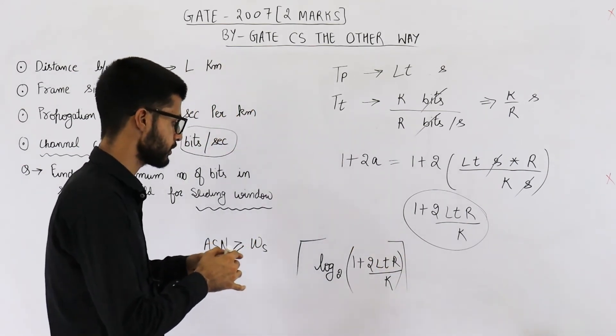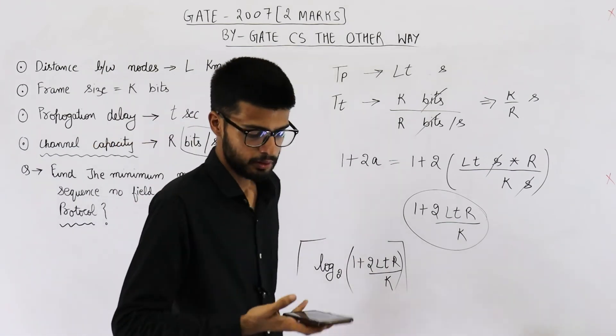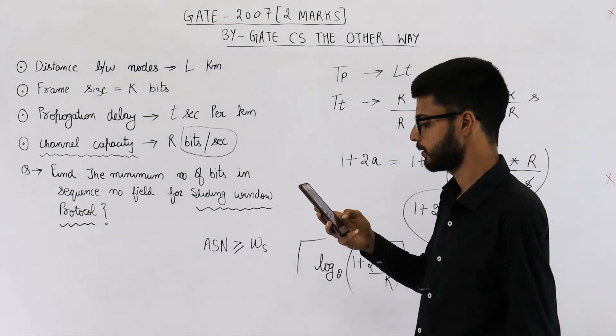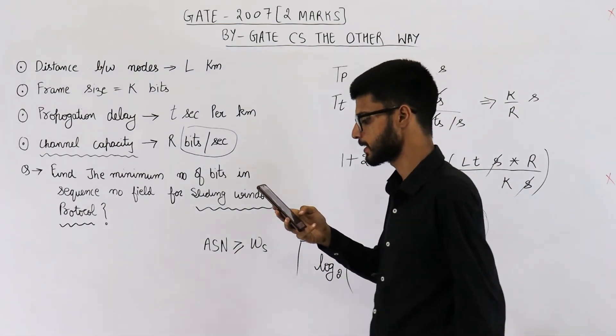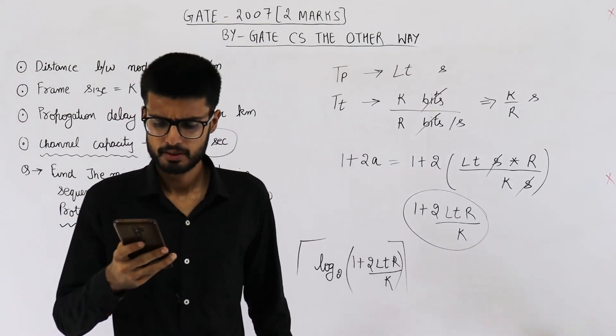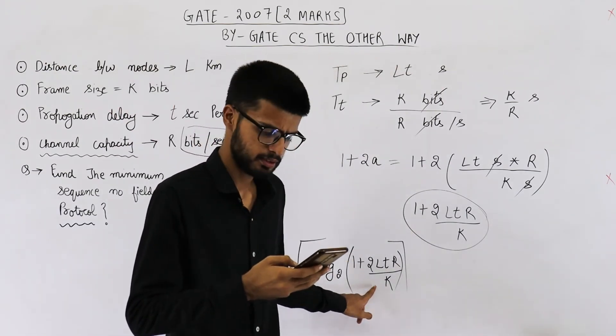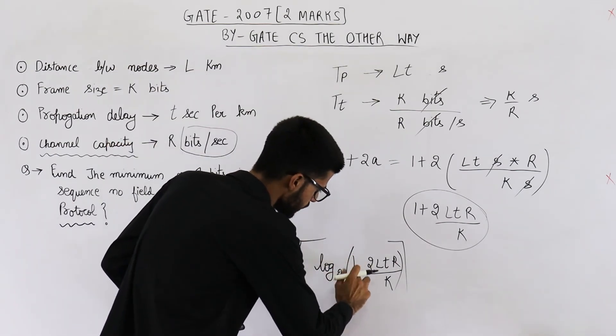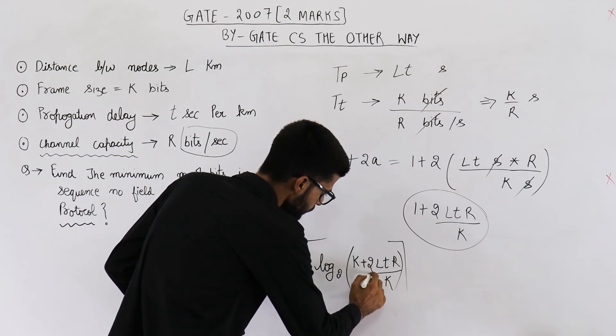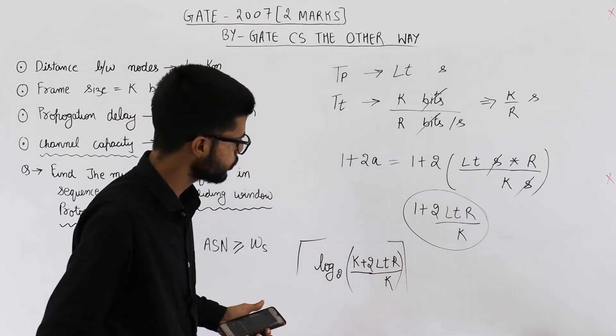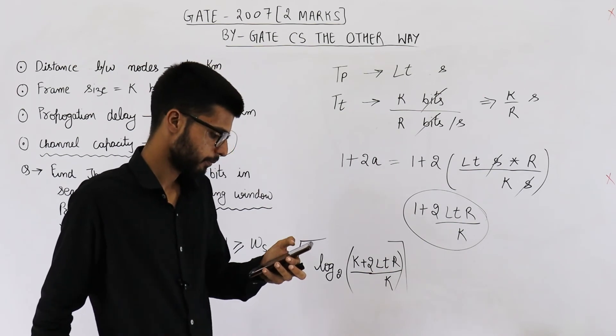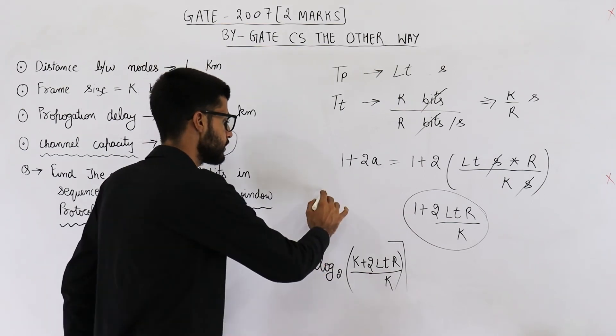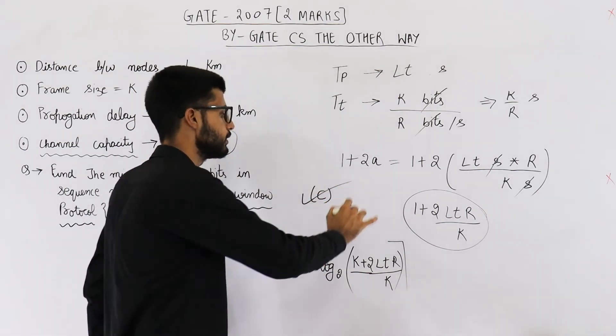So let us see which option is correct. You can have a look at the options. I think option C must match. Let me just see. So if you take the LCM, this will become K plus 2LTR by K. Yeah, option C is exactly this. So answer is option C.